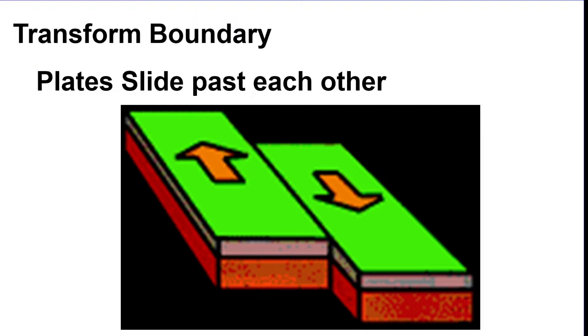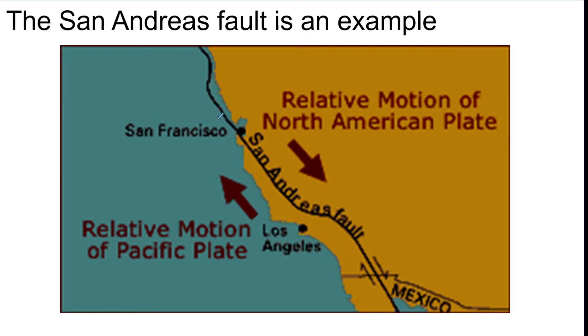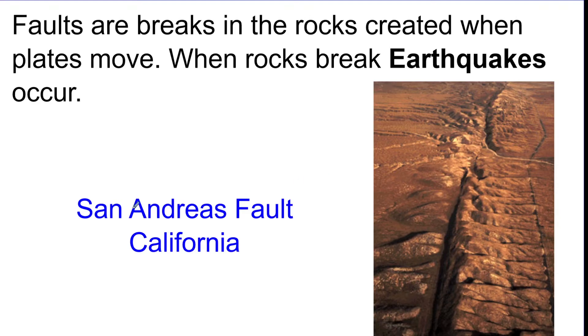The last boundary is called transform boundary. This is when the plates slide past each other like this. So they're not going towards and they're not going away. They're going past each other. The San Andreas Fault in California is your main example of the transform boundary in the United States. And you're going to get a fault at this area, which is just essentially a breakage in the rock. And this is where you're going to get earthquakes.